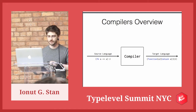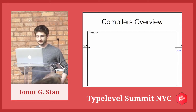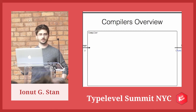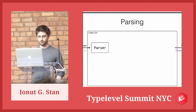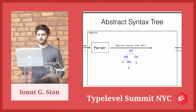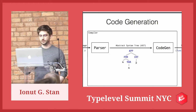What's the output? Some JavaScript because everybody loves it. What's inside the compiler? The first step in a conventional compiler would be a parser. The parser just takes the source code and produces an intermediate data structure called the abstract syntax tree, the AST. We have a sample representation here of the tree. And this one gets fed into the final piece of the compiler, the code generator, which produces the output.